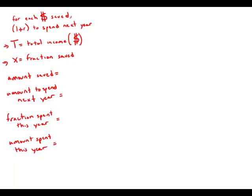Okay, a lot to keep track of here. So first of all I'm going to call capital T the total income he has this year. That is the dollar amount that's actually going to be split up between what he saves and what he spends.